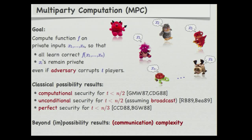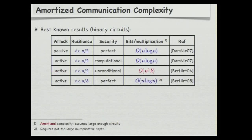A lot of work has been dedicated to reducing the complexity — and by complexity I mean communication complexity: how many bits do the players have to exchange in order to securely compute a function? This table summarizes the state of the art for the different settings. The complexity is expressed as the amortized communication complexity per multiplication — how many bits do the players have to exchange per multiplication in the circuit representation of the function, assuming the circuit is big enough.